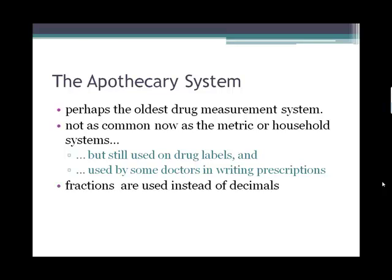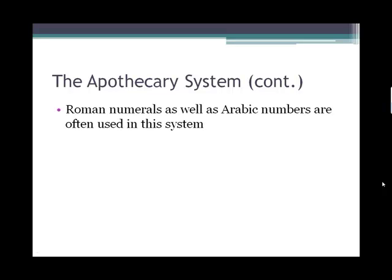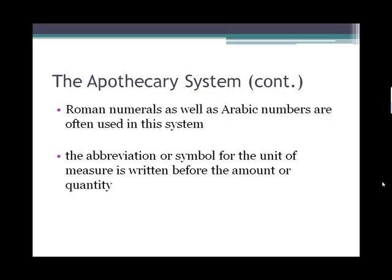Like the household system, unlike the metric system, they use decimals. Also, the apothecary system sometimes uses Roman numerals, and they usually write their abbreviation first as the units and then write the amount or quantity.